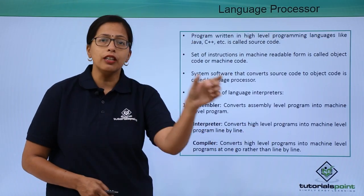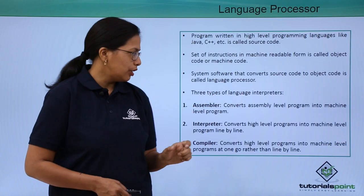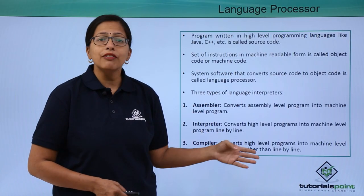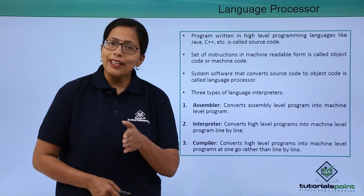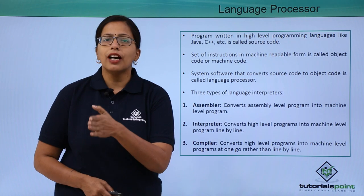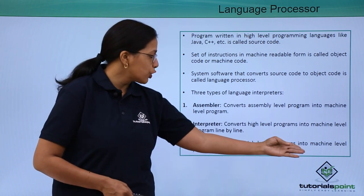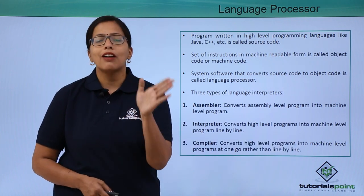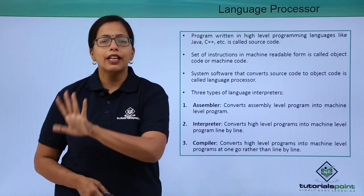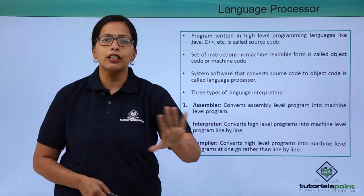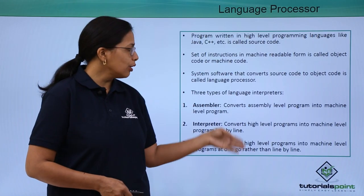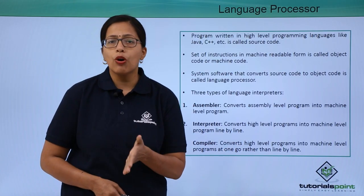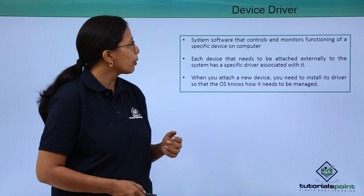Each line is converted into machine level language. What does a compiler do? A compiler will again convert the high level language into a machine level language, but rather than doing it line by line, it will do it all at one go. We'll be discussing all these in a little more detail in a further video.